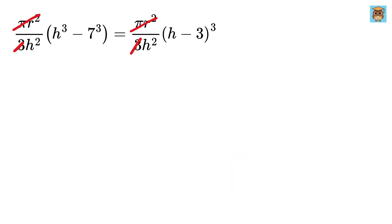We can cancel out pi R square over 3 from both sides. Both these H squares will also get cancelled, and we will be left with H cube minus 7 cube, which equals 343, equals H minus 3 whole cube.